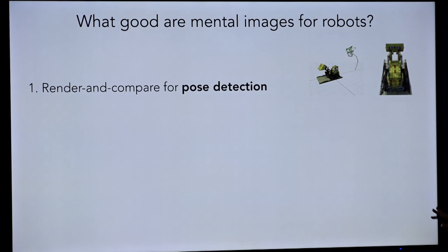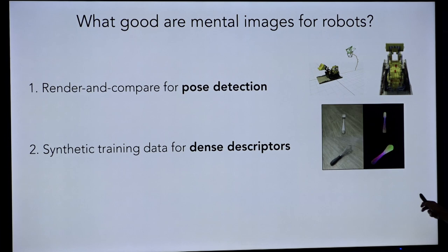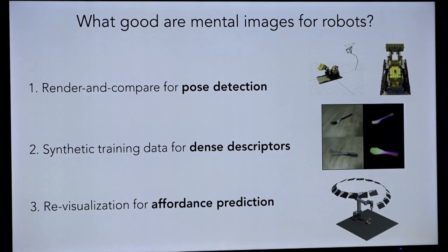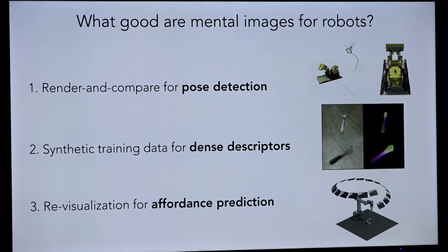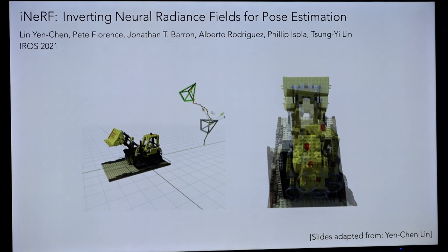We'll talk about three projects, all led by Yen Chen. The first is using NeRFs in a render-and-compare pipeline for pose detection. Then we'll talk about using NeRFs as a way of sampling synthetic data as training data for a dense object descriptor. The last one will be using NeRF as a virtual camera that can re-render a scene in a way that makes it easier to do 6DOF estimation. Any questions about NeRF before I dive in? If you haven't seen it, it's just a wonderful new format for 3D data.